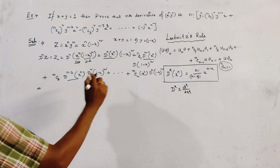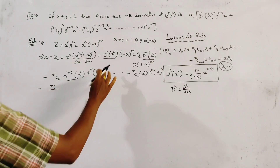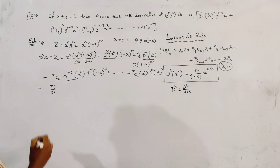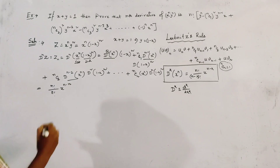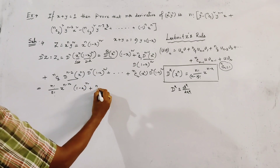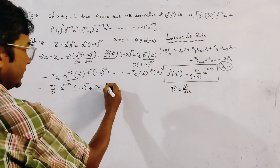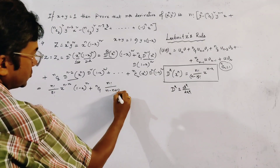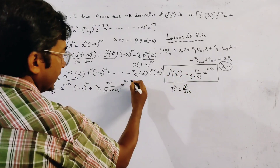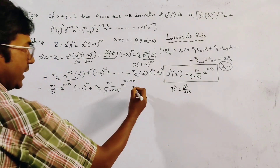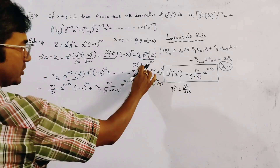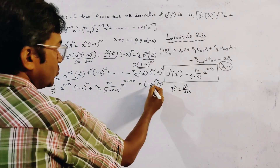Applying the derivative formula directly: in the first term, k equals n, so we get n! divided by (n minus n) factorial, times x to the power (n minus n), which is x^0 = 1, times (1 minus x)^n. For the second term, k equals n minus 1, giving n! divided by (n minus n plus 1) factorial times x to the power 1, times the first derivative of (1 minus x)^n, which gives n times (1 minus x)^(n-1) times (minus 1).